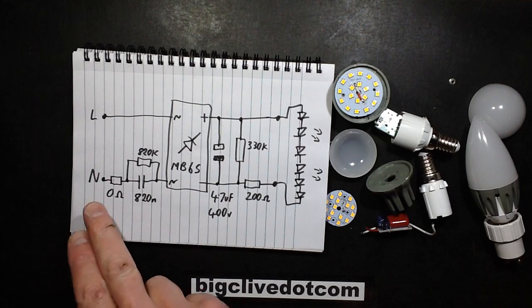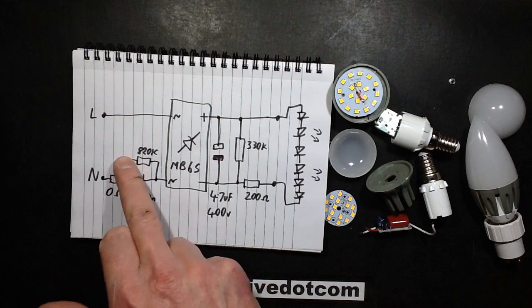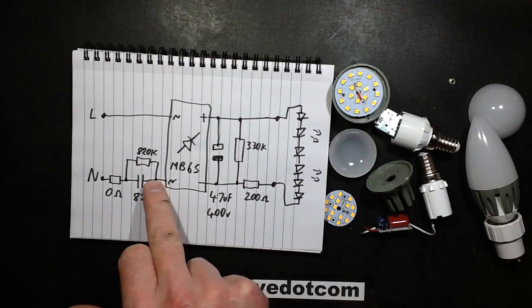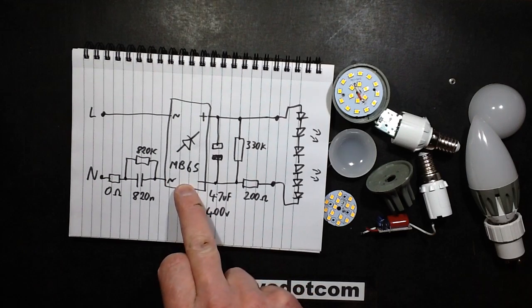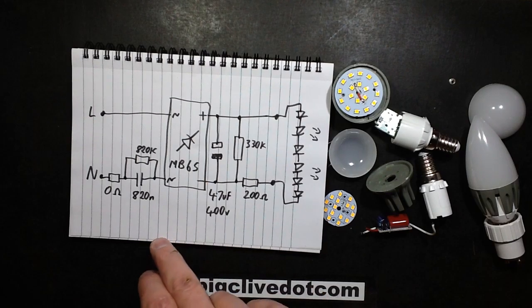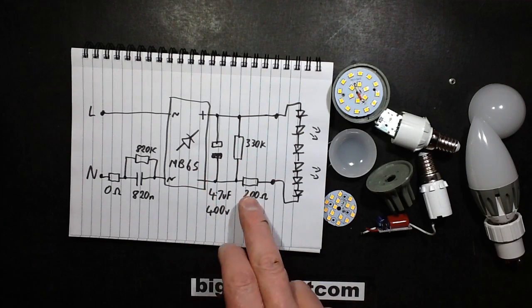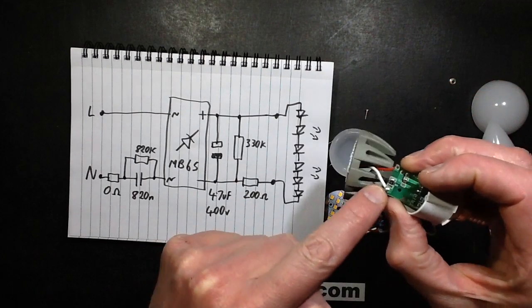It's got an 820 nanofarad capacitor, which is quite high value, and an 820k resistor discharge resistor across it. An MB6S bridge rectifier, 4.7 microfarad 400 volt capacitor on the output with a 330k discharge resistor, and then the 200 ohm resistor, quite a beefy 200 ohm resistor in surface mount terms.